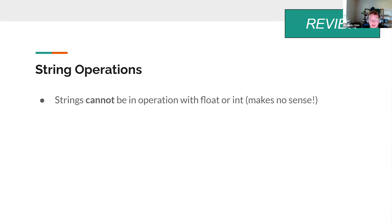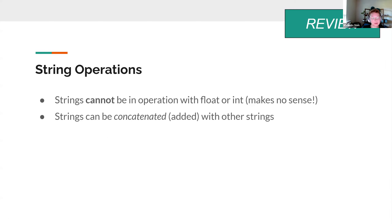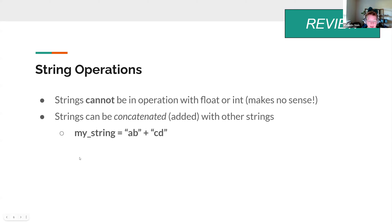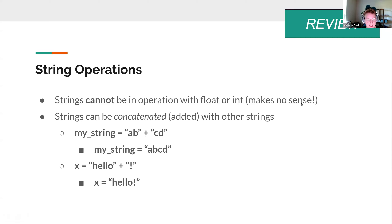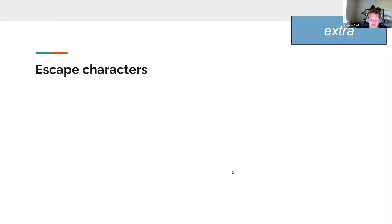You have to know what type you're dealing with to know what operations you can do. Strings can't be in an operation with a float or an int, except in some special cases we'll talk about later. But strings can be concatenated together — that's called concatenation. When you take string one and string two and push them together using the addition symbol, that is concatenation. Even numbers inside quotes are considered strings.